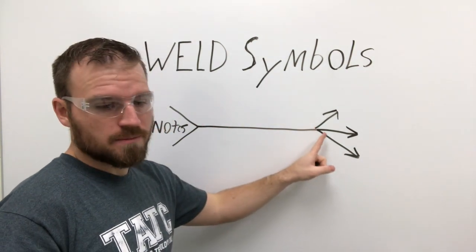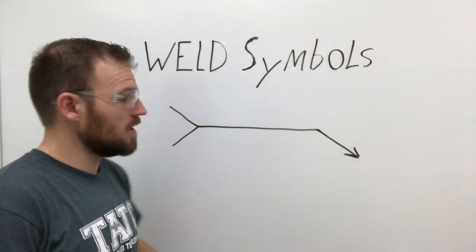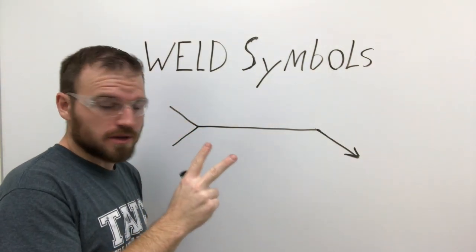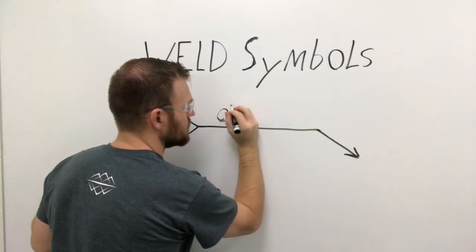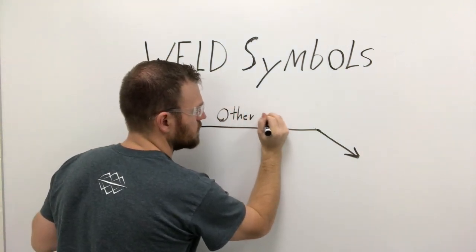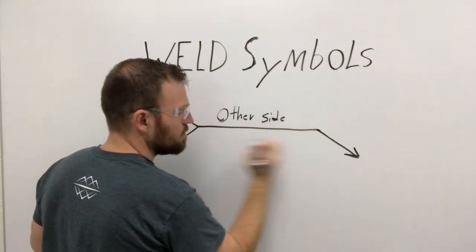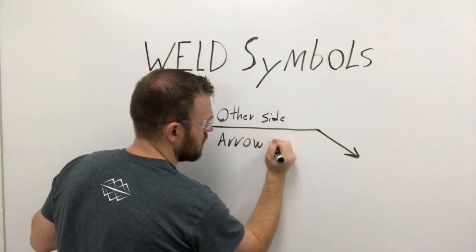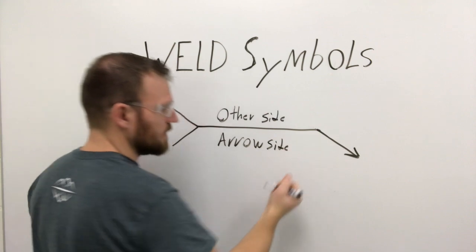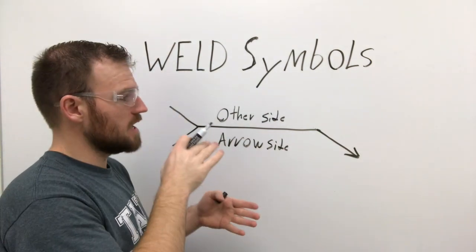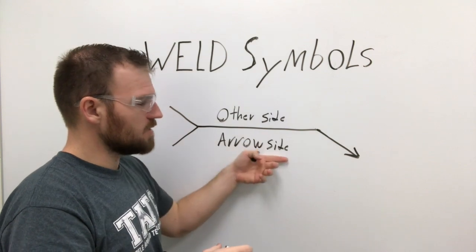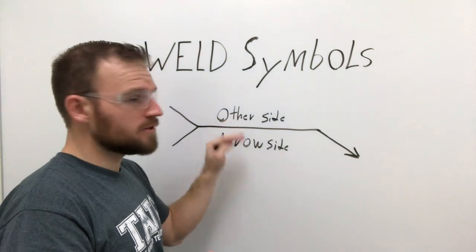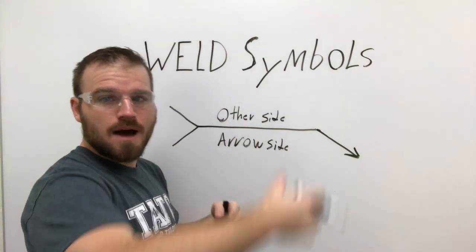So we got that stuff cleaned off. What we have is this reference line actually has two sides to it. The top side is considered the other side, and the bottom side is considered the arrow side. Now what this would indicate is, if it's pointing at a joint, the arrow side means you're going to weld the joint that the arrow is actually pointing to, while the other side would be indicating that you need to weld the opposite side of it.